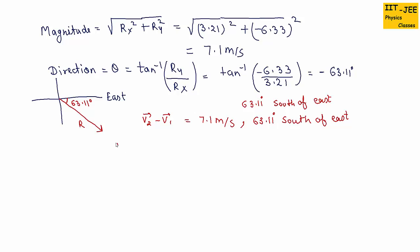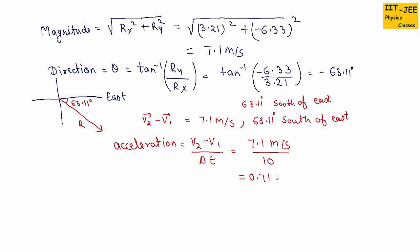Now we can find acceleration using this value. Acceleration equals (v2 minus v1) over delta t, which gives 7.1 m/s divided by 10, equals 0.71 meters per second squared. The direction of acceleration is the same as the change in velocity: 63.11 degrees south of east. That's the answer.